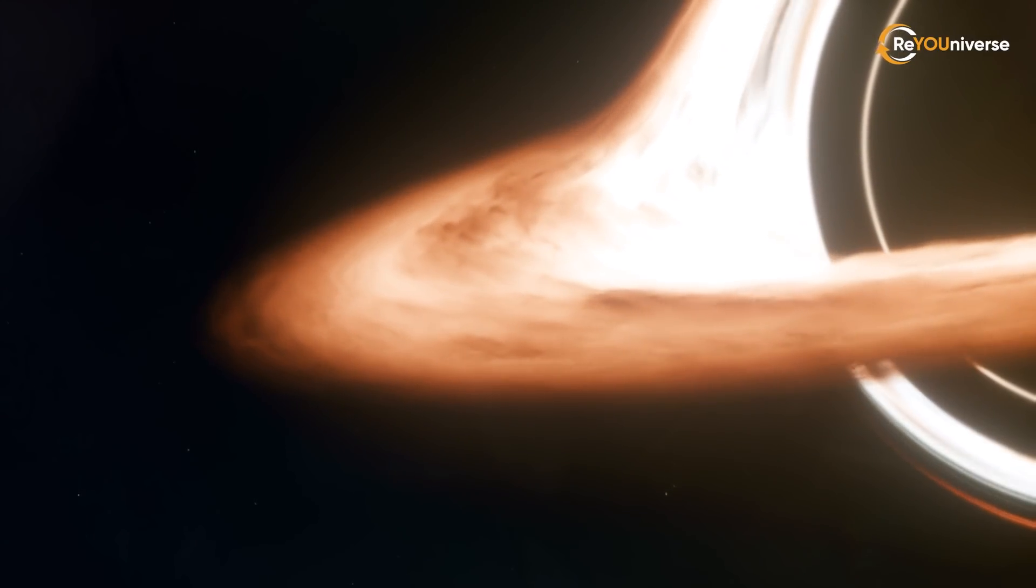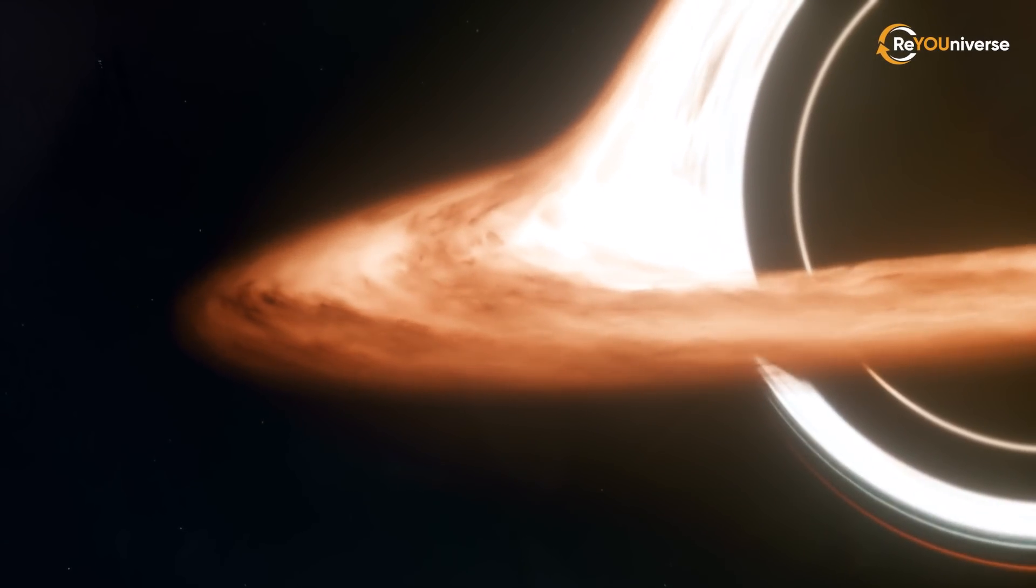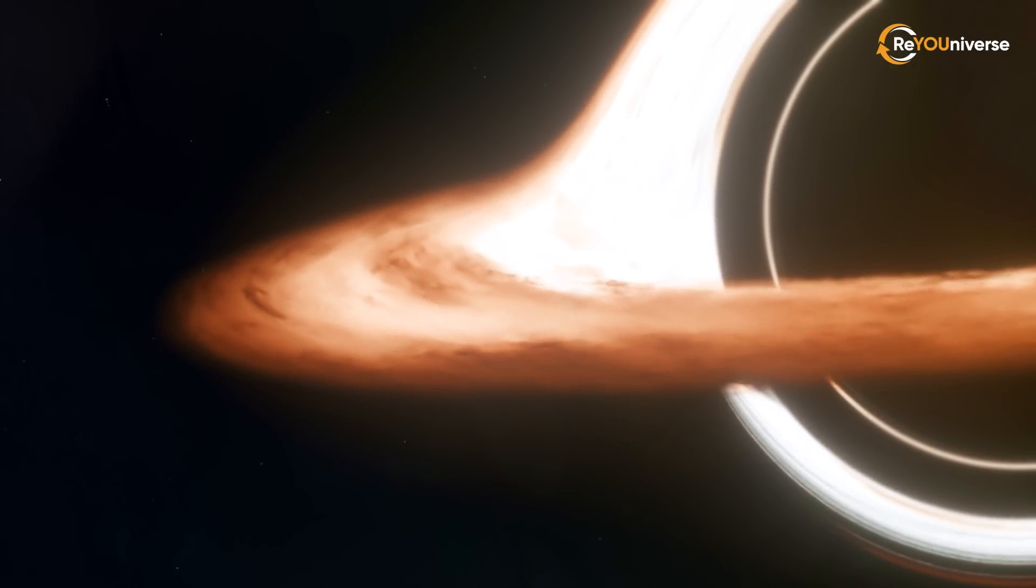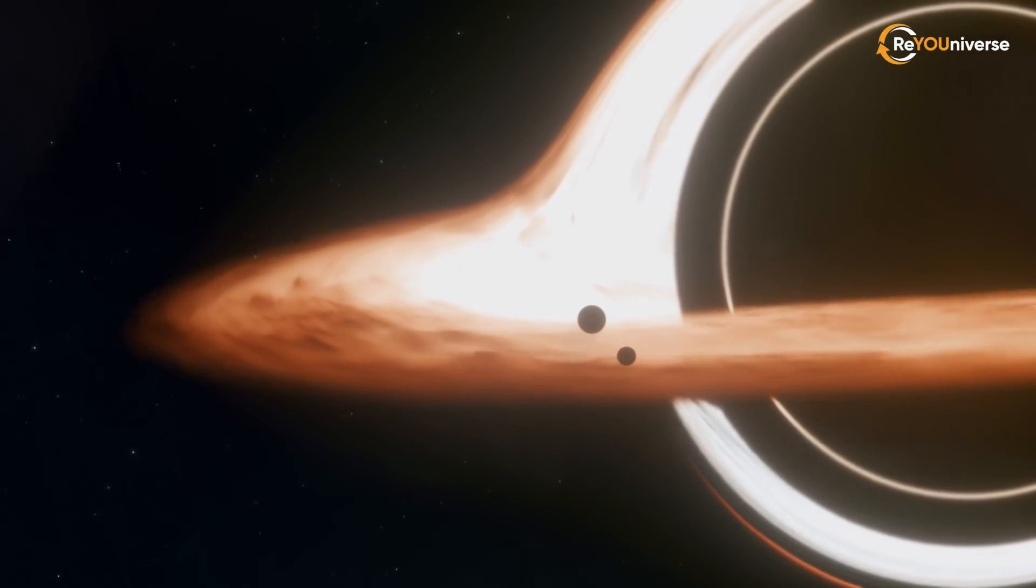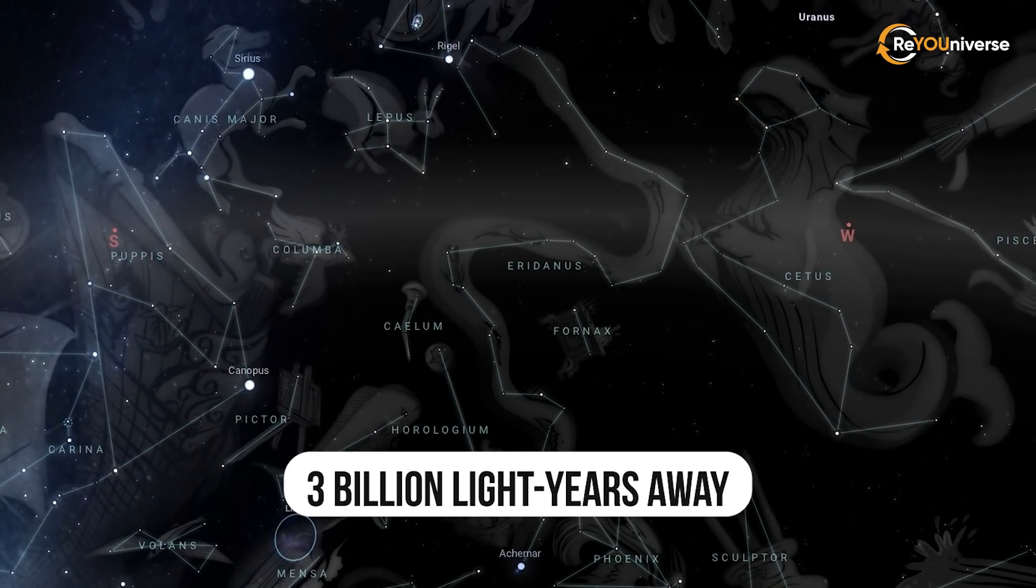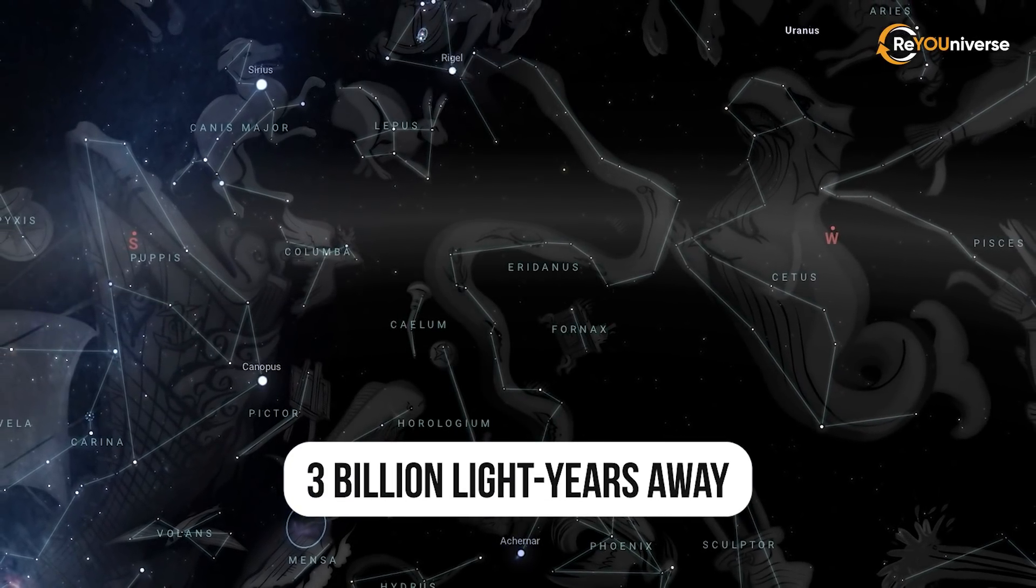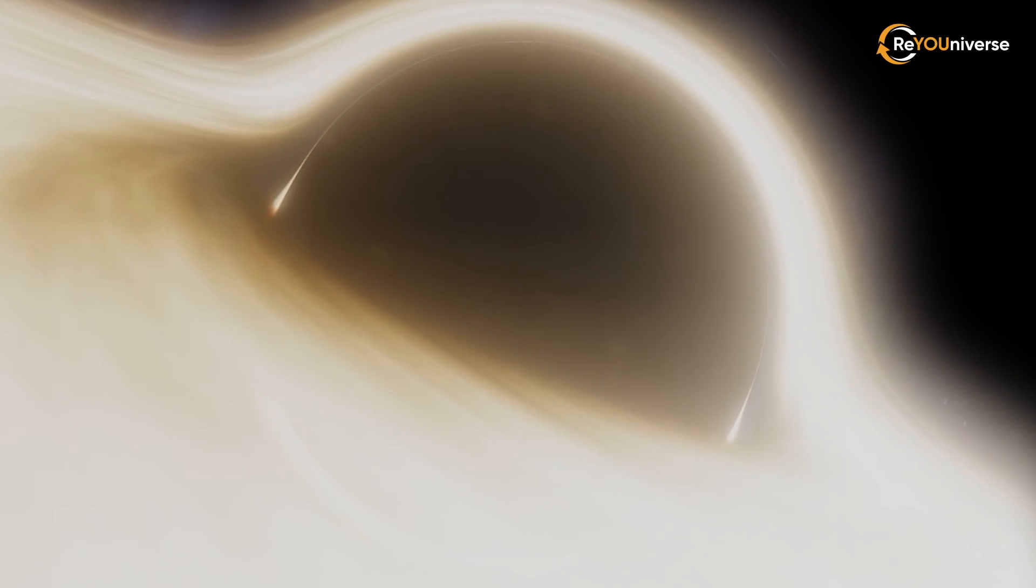Scientists have put forward several explanations as to how this giant anomaly appeared. For example, that it's a huge black hole that absorbs everything coming its way. It will expand and eventually swallow the Earth along with people. But don't you worry. First, the Eridanus constellation is 3 billion light years away, so it will take a very long time indeed.